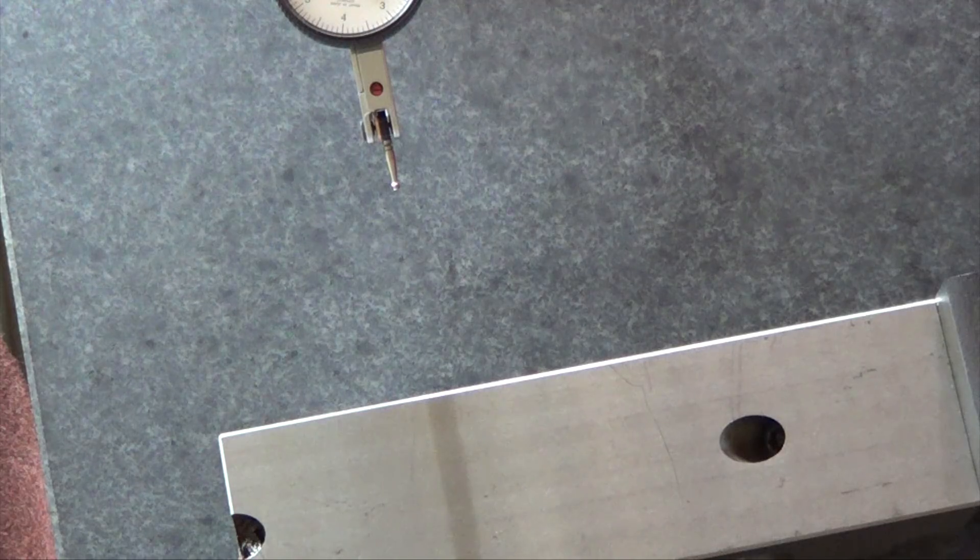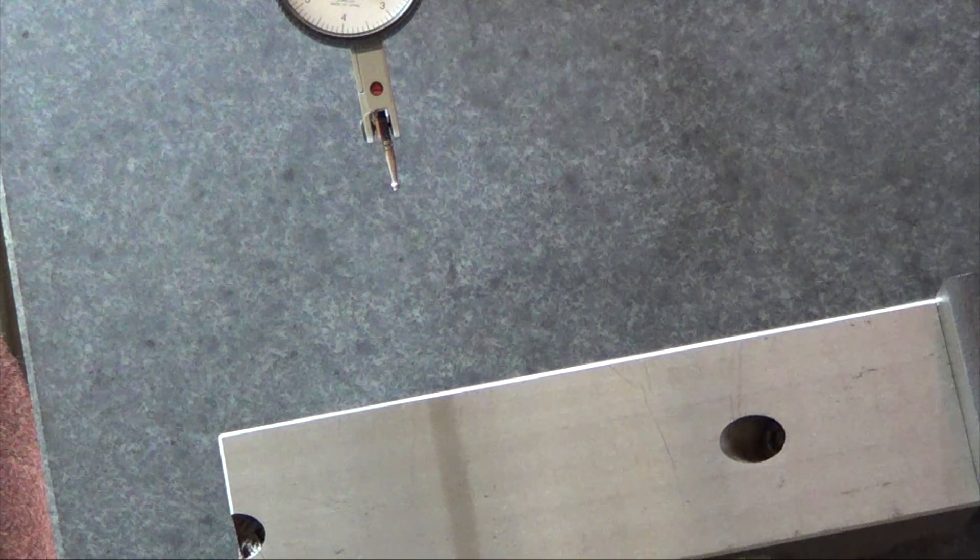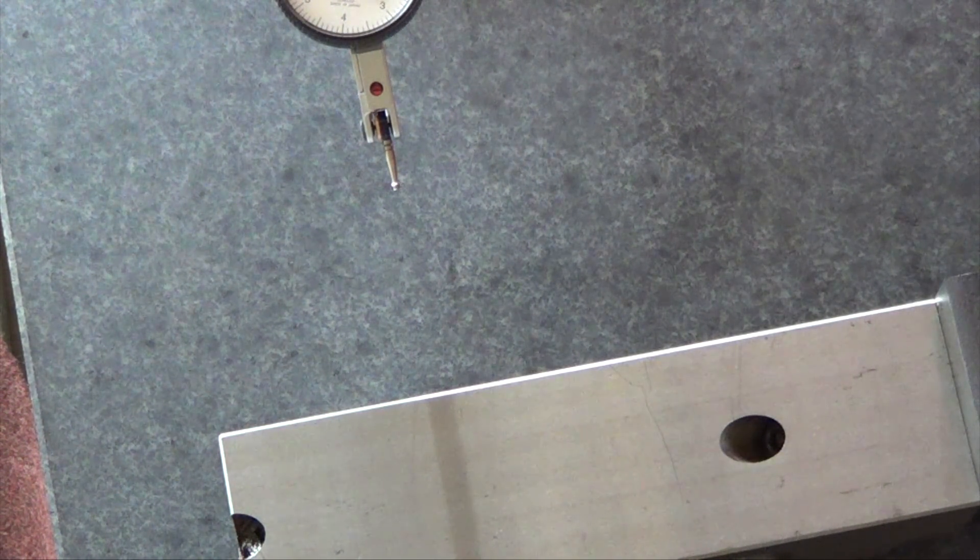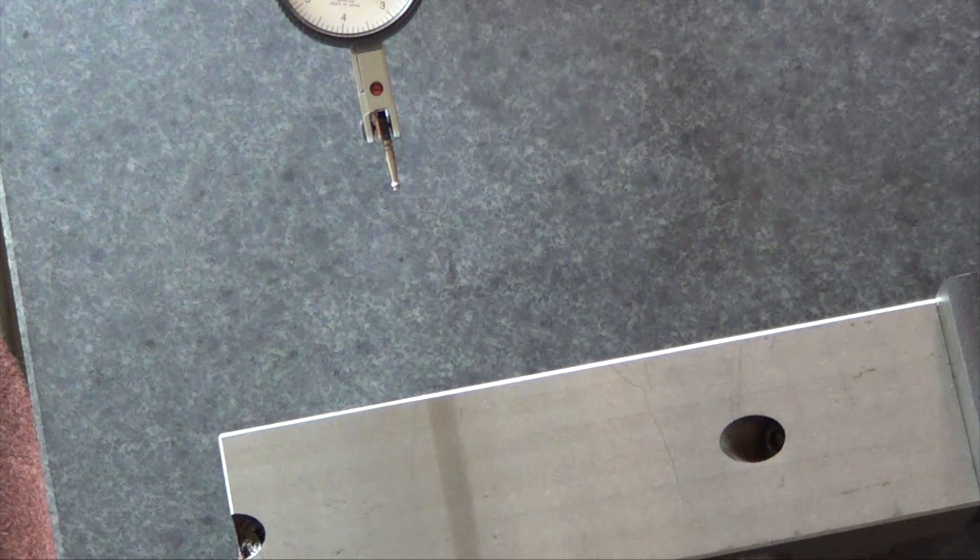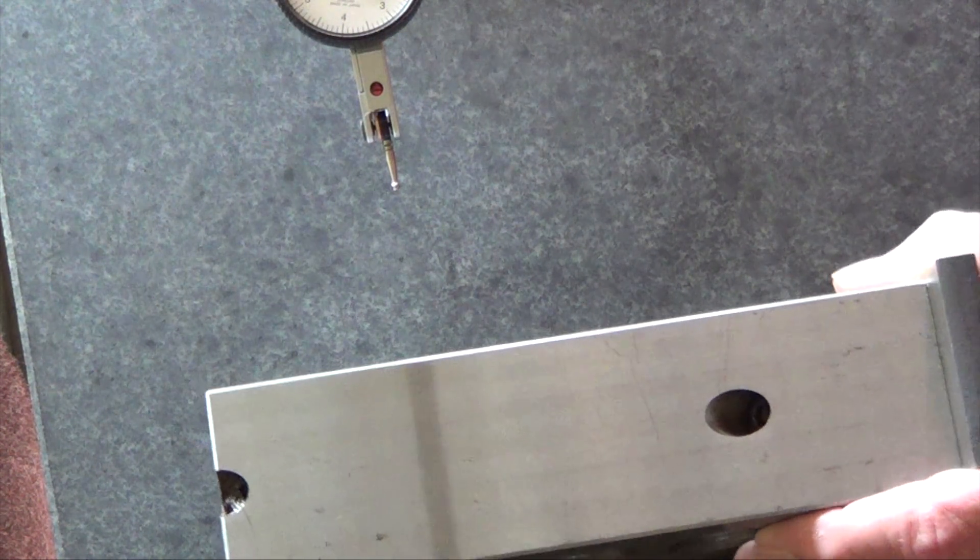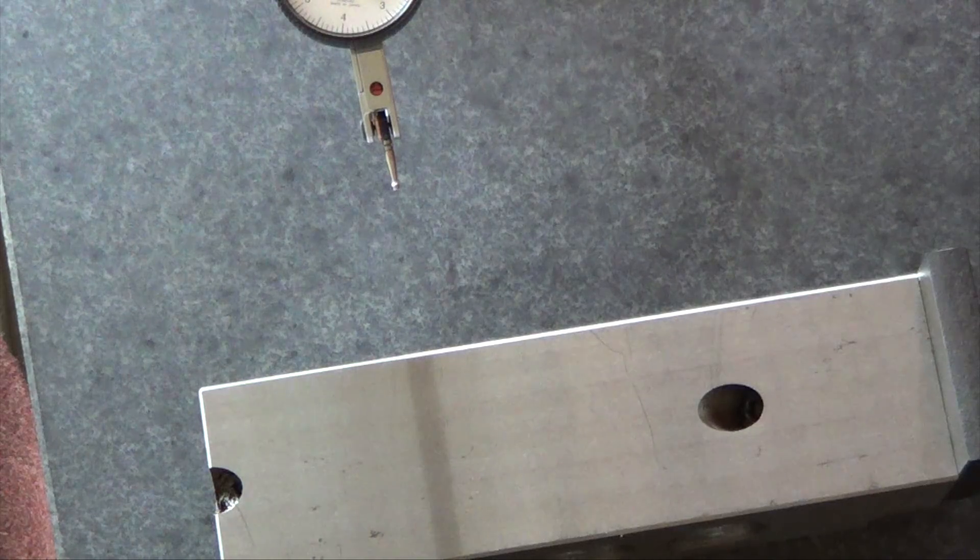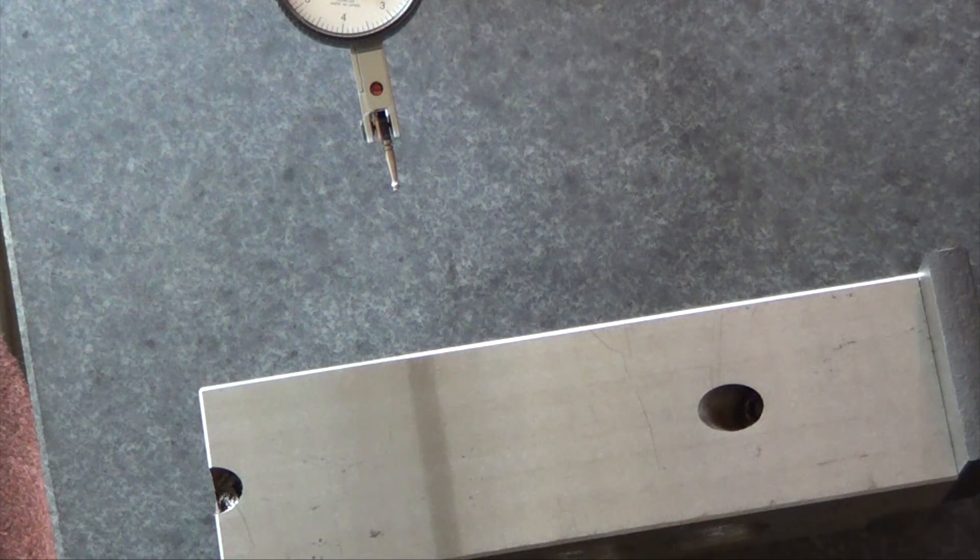I don't have that angle block. 2 degrees, don't have that. 3, 4, don't have any of them. So great. I didn't do my homework and I've got a sine bar and I don't have the angle blocks to check anything with.